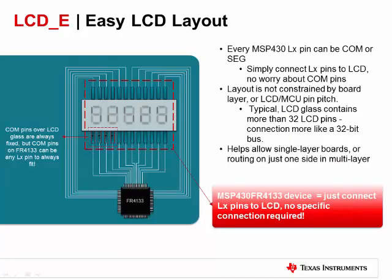The LCDE module helps to enable easy LCD layout. On earlier MSP430 devices with LCD, the pins corresponding to the comm lines were fixed, meaning specific pins on the MSP430 had to be connected to specific comm line pins on the LCD display. With FR4X, any LCD-capable pin on the device can be configured as either comm or SEG. This means you can have a wide range of pin options for connecting the comm lines, making layout much easier. This also means that if a layout mistake is made where the comm is connected to the wrong pin, this can easily be fixed in software.